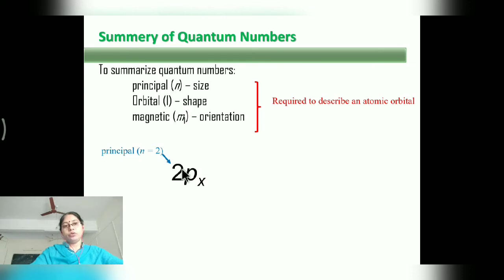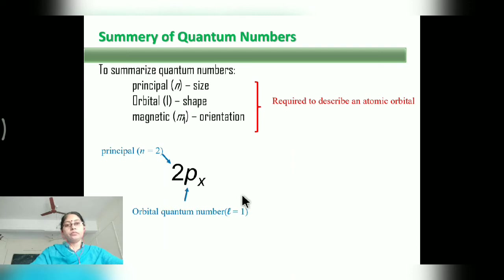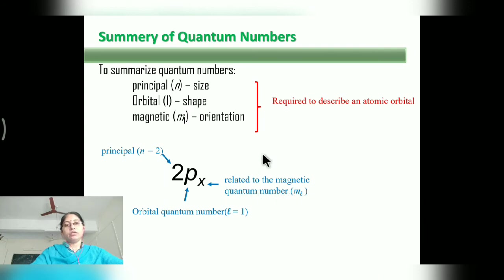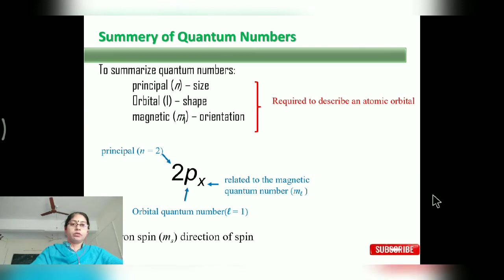In spectral notation, the first digit represents the principal quantum number. The letter — such as P — indicates the orbital quantum number; if P, then L equals 1 (since 0 is S, 1 is P). The subscript X represents the magnetic quantum number ml. The spin quantum number is plus half or minus half.